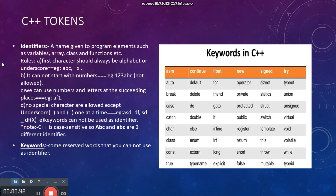The next topic is about tokens. The first token is the identifier. An identifier is a name given to a program, variable, class, array, or function. There are some rules to follow for identifiers. The first rule is that the first character should always be an alphabet or an underscore, as you can see in the example here.